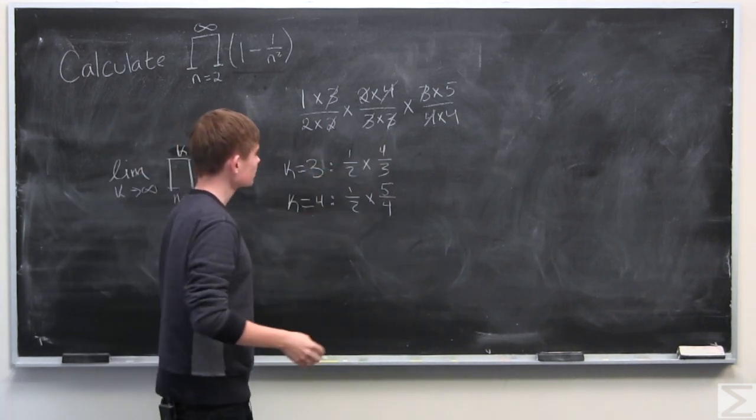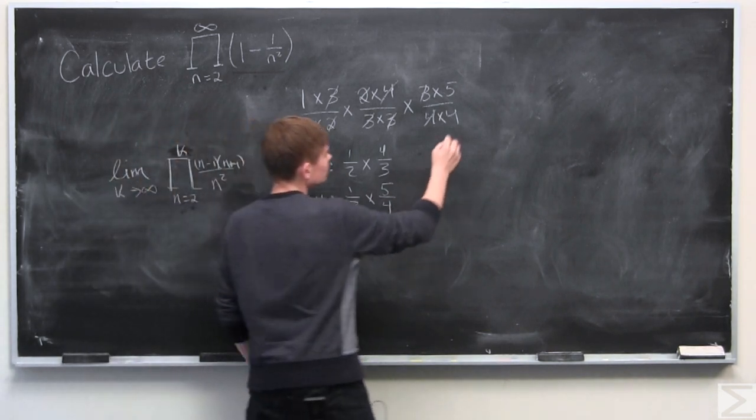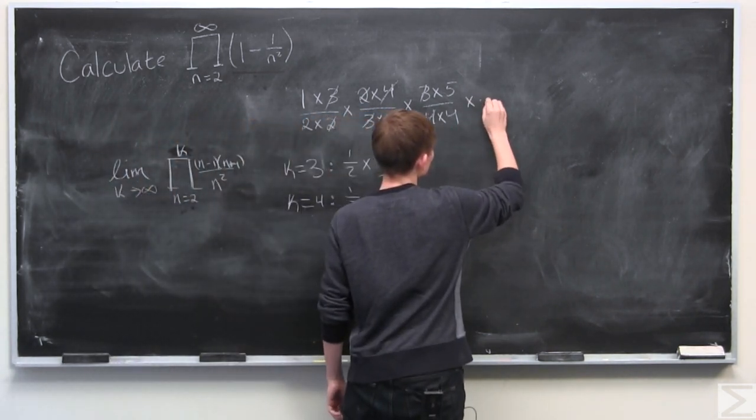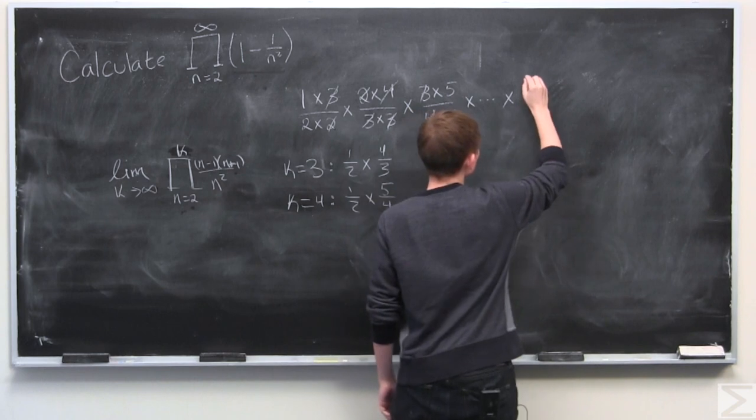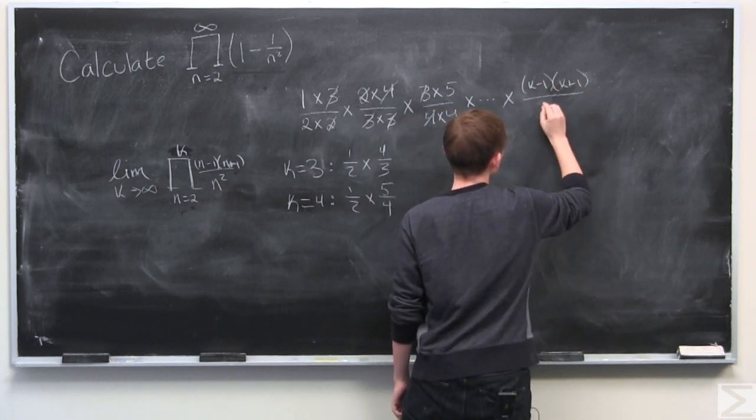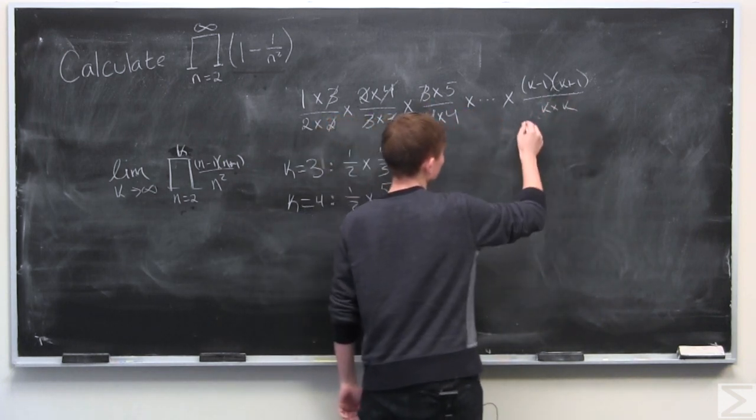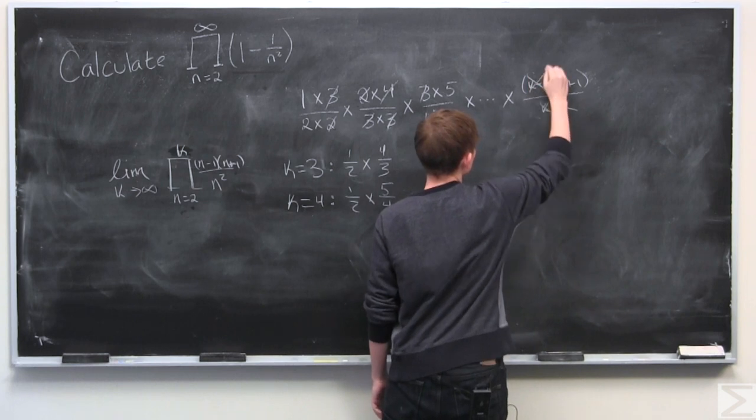And hopefully you're seeing a pattern. And if we brought this out to k we would get k minus 1 times k plus 1 over k times k, based on the pattern. These would cancel out.